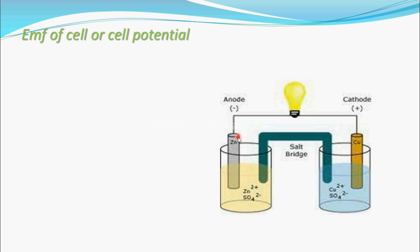Let's see what is EMF of cell, or cell potential. EMF means electromotive force — the force which motivates the transfer of electrons. In a galvanic cell, electrons transfer from anode to cathode. The force which causes these electrons to transfer from anode to cathode is called the EMF of the cell, also known as cell potential.